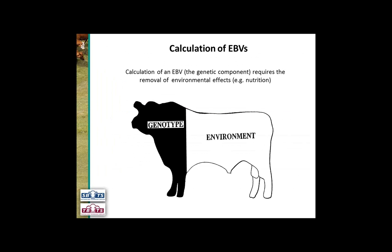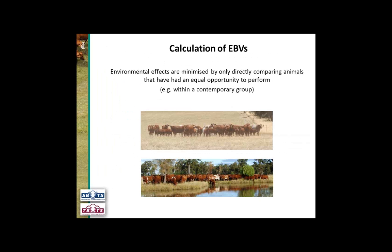When calculating an EBV, we're targeting the genetic component of what an animal looks like, and we're trying to eliminate what we call environmental effects — differences in nutrition, treatment, etc. Environmental effects are minimised by only directly comparing animals that have had an equal opportunity to perform, i.e. within a contemporary group. If animals are running in quite different conditions or on different properties, Breedplan never directly compares those animals.